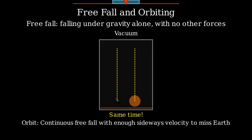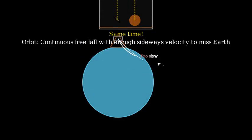An object in orbit around Earth is actually in continuous free fall toward Earth. The key difference is that it has enough sideways velocity that it keeps missing the Earth as it falls. Let me illustrate this.